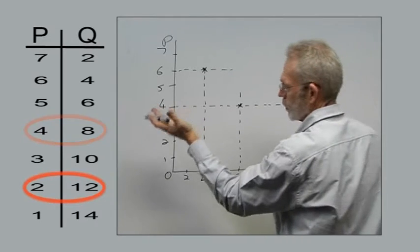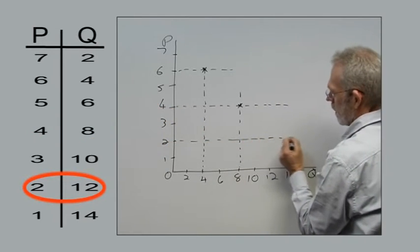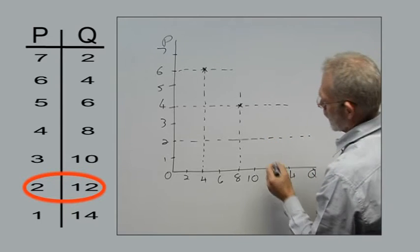At a price of 2, quantity demanded is 12.